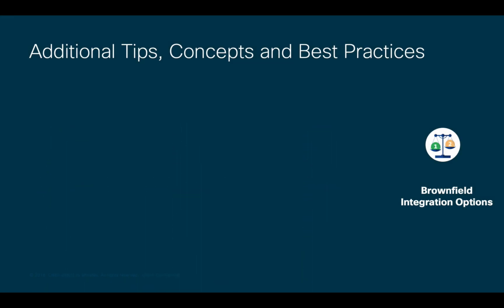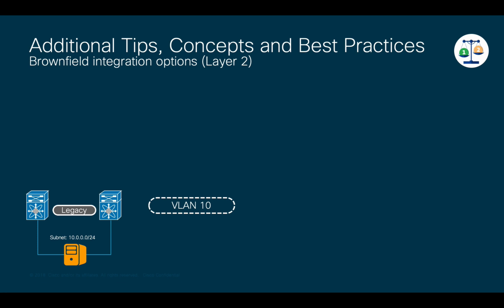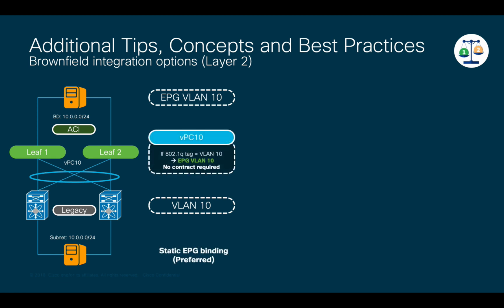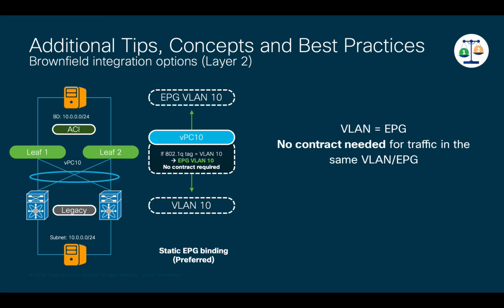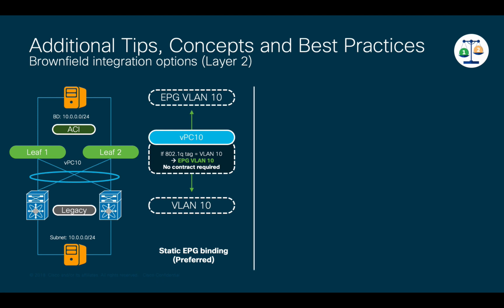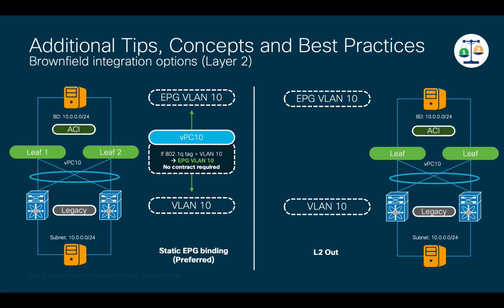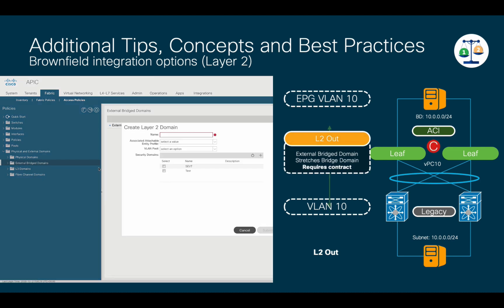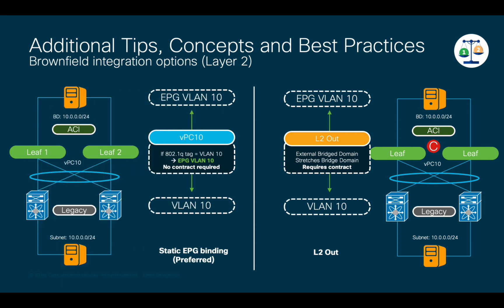Finally, when integrating legacy networks to ACI, we cover the static EPG binding as a preferred method to extend a VLAN on the legacy side into ACI. This is achieved by classifying incoming traffic based on the interface where traffic is being received along with its VLAN ID. This is very convenient for migration scenarios as well, since no contract is required. Keep in mind VCNE and preferred groups could also be used for migration purposes. There's another option called L2out, which requires the creation of an external bridge domain in the access policy section and stretches the bridge domain through a specific port. The main difference with static EPG binding is that L2outs require contracts to communicate with EPGs, even if the same bridge domain is being used. This is why static EPG binding is the preferred method when integrating external switches and layer 2 connections.